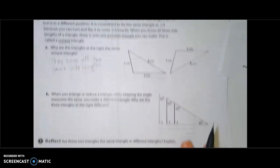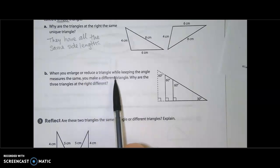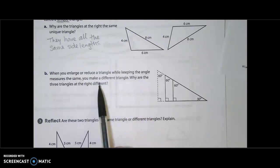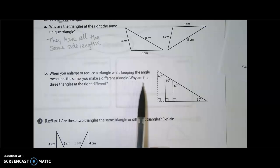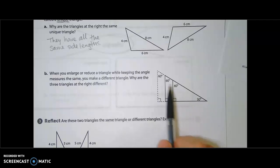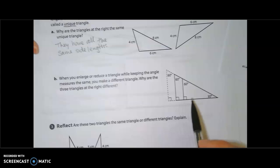All right, and then question B asks, when you enlarge or reduce a triangle while keeping the angle measures the same, you make a different triangle. Why are the three triangles at the right different? Well, when we look at these, our angles stay the same. They're all using this 130 degree angle, and all of these have a 60 degree angle and a 90 degree angle.